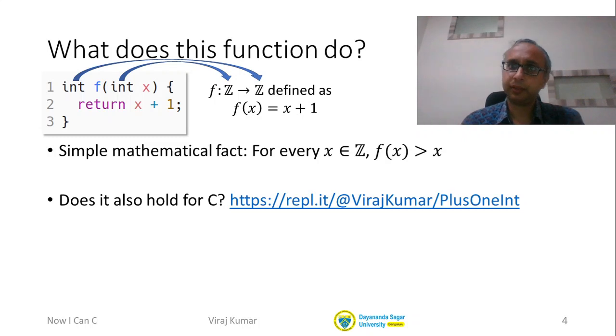I will show you this in the next video—running the C code—and we are going to experimentally check this fact. Is it the case that f(x) is strictly greater than x for any x that we could try? Let's do this experiment right now.